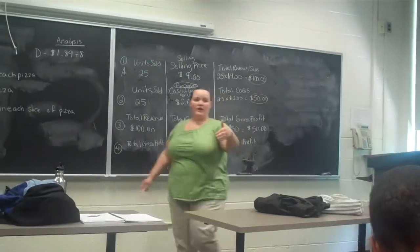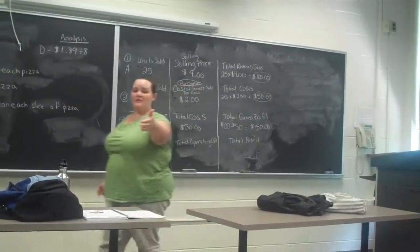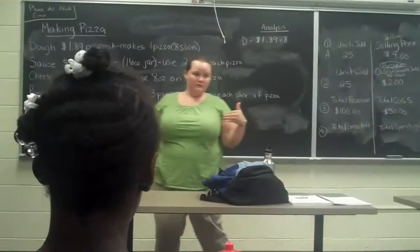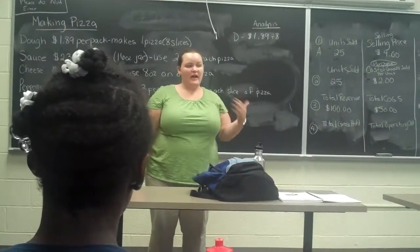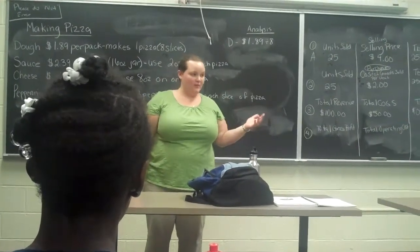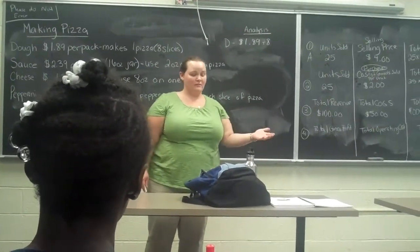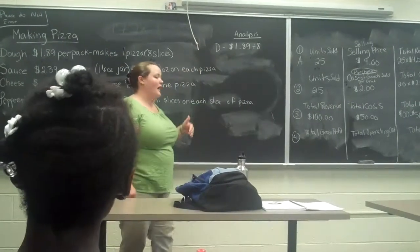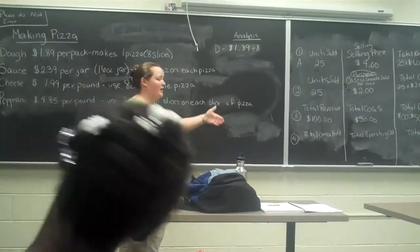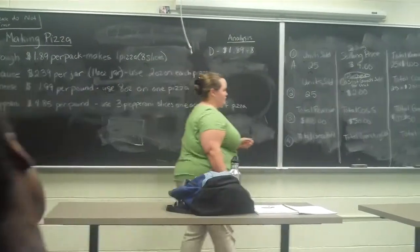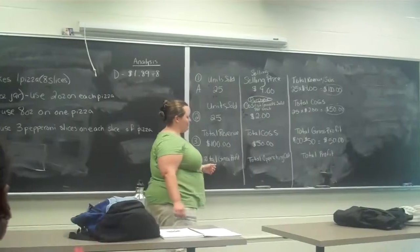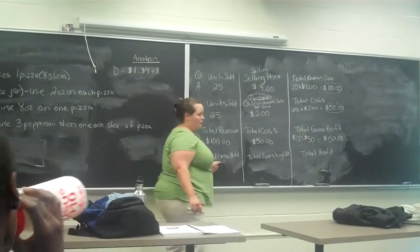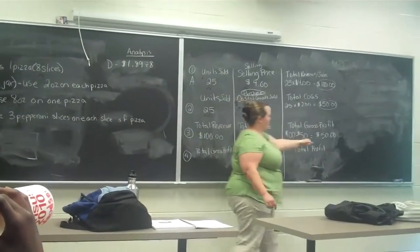If you have to pay for it, you're taking money out of your profit. You don't get to take that home and spend it because you have to pay somebody that money. That's why we're subtracting — because we have to pay them the money. So the total gross profit was $50.